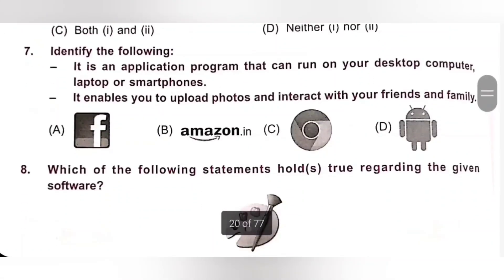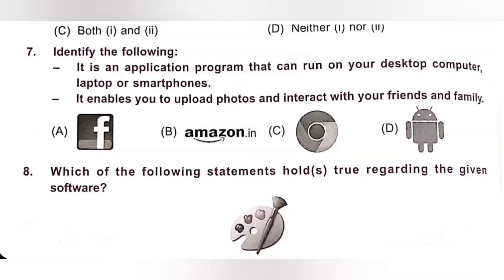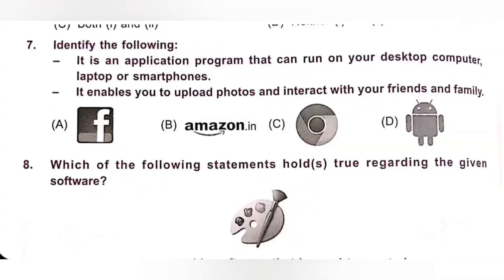Seventh one. Identify the following: it is an application program that can run on your desktop computer, laptop, or smartphone. It enables you to upload photos and interact with your friends and family. Options: A. Facebook, B. Amazon.in (e-commerce website), C. Chrome, D. Operating system. Option A, Facebook, is a social networking service that enables you to upload photos and interact with friends and family. Option A is the correct answer.